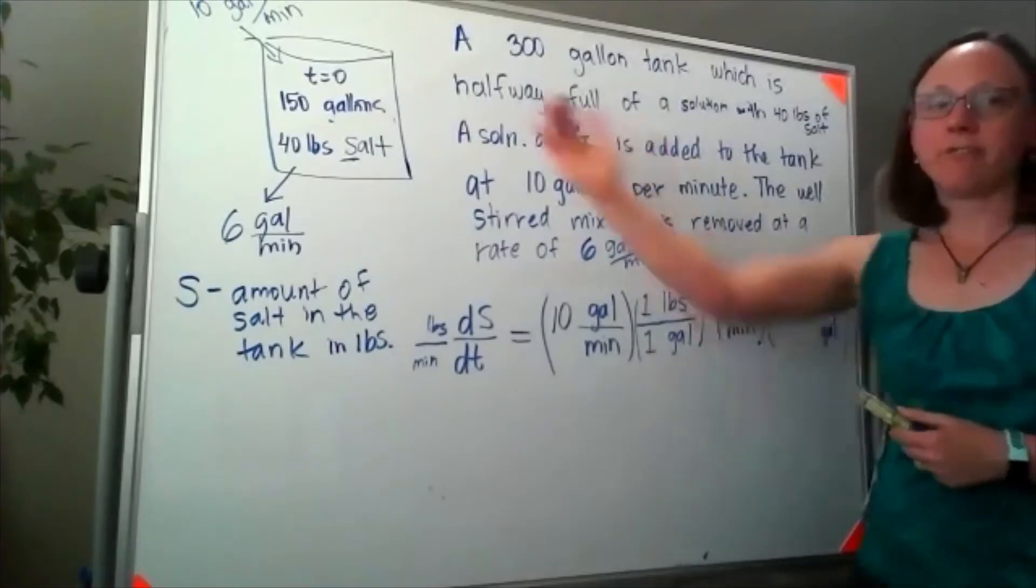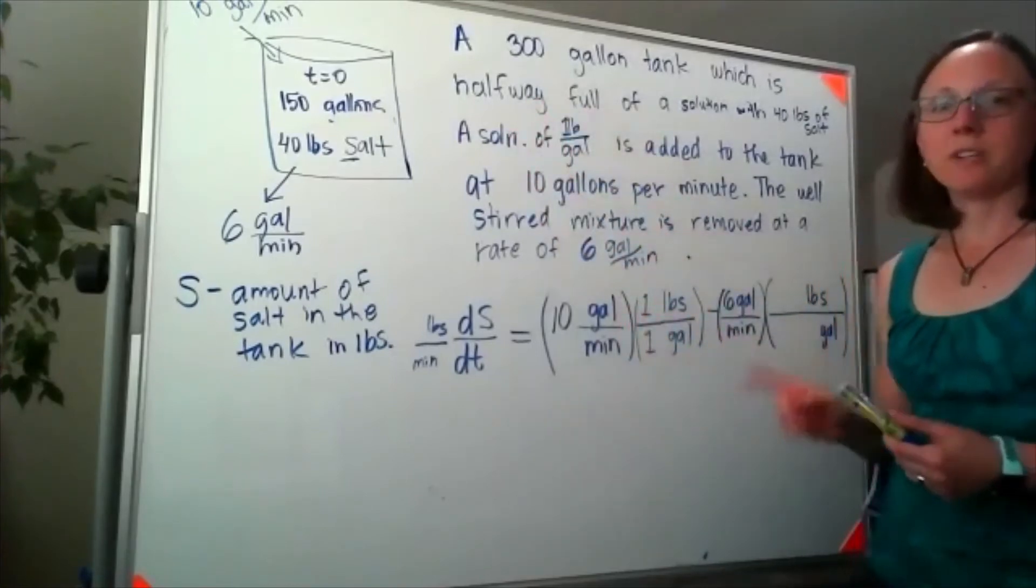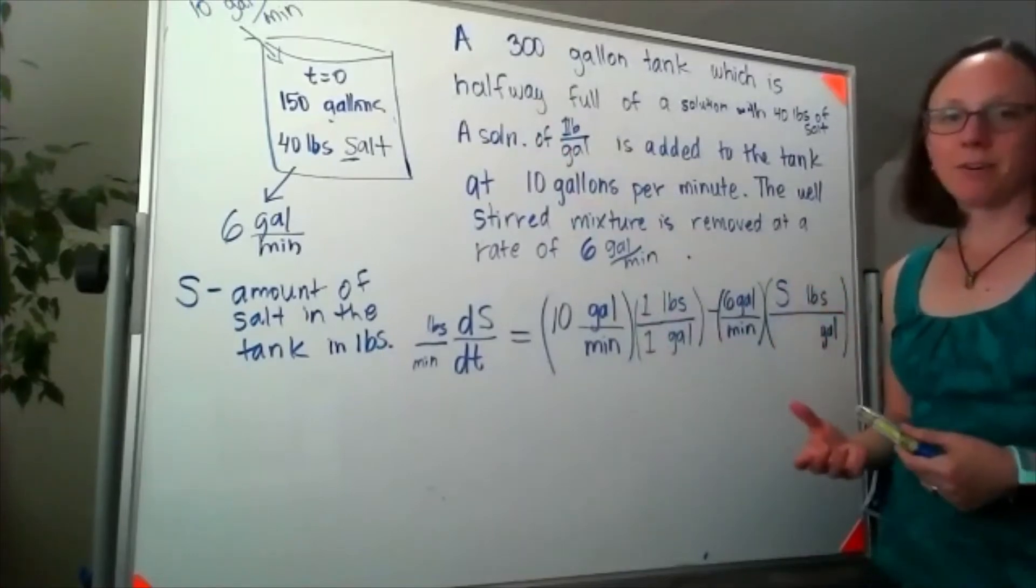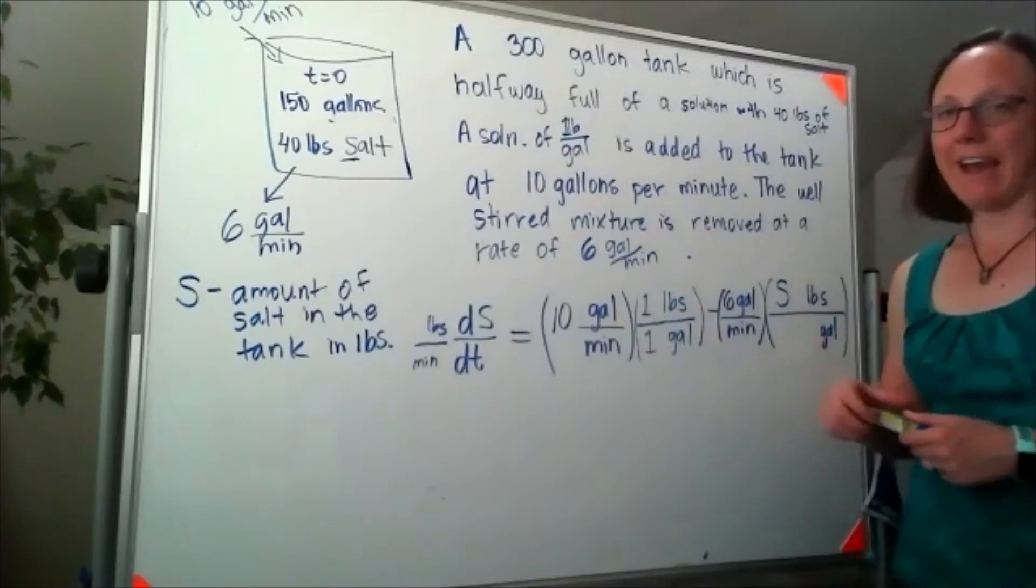This is still flowing out of the tank, which means the pounds of salt in the tank is S. But now let's think for a minute about what's happening with the gallons.